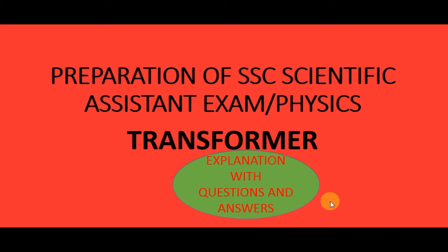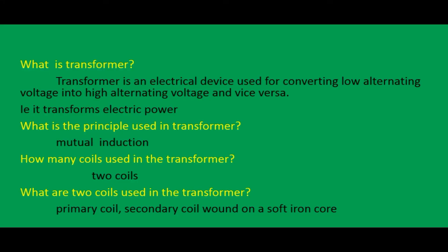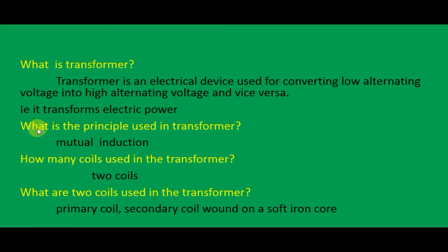Hi friends, in this video we see about transformer. I would like to explain this topic with a question and answer format. First question: what is a transformer? A transformer is an electrical device used for converting low alternating voltage into high alternating voltage and vice versa. It transforms electric power from one circuit to another circuit.